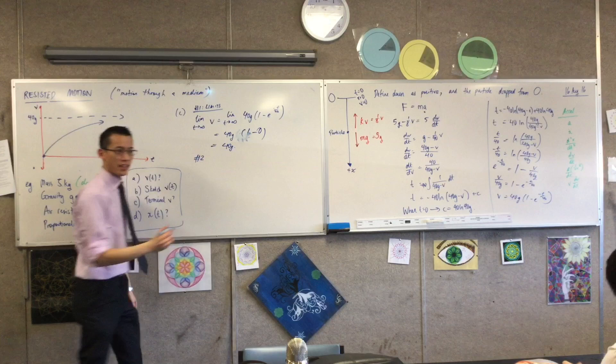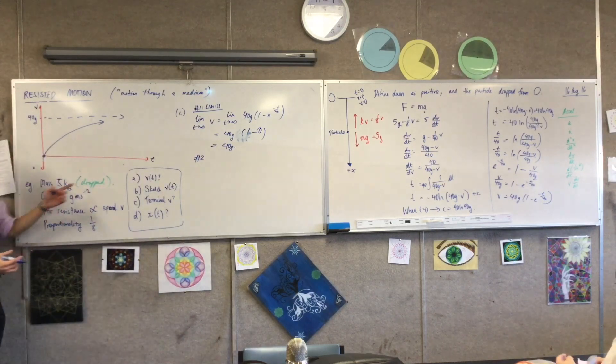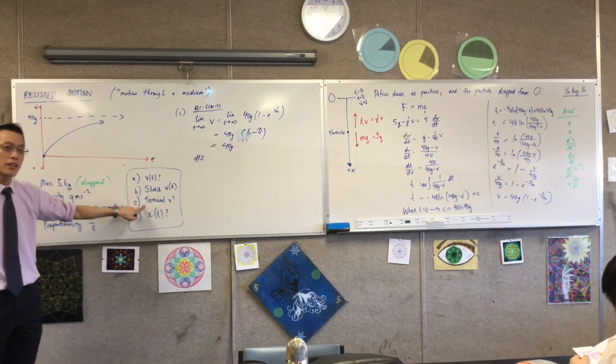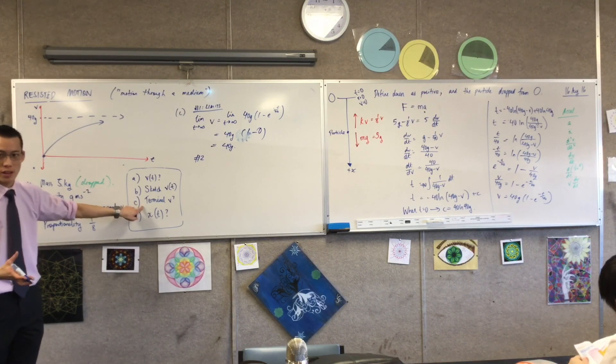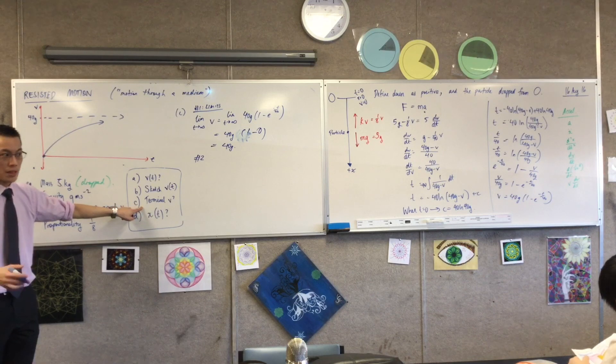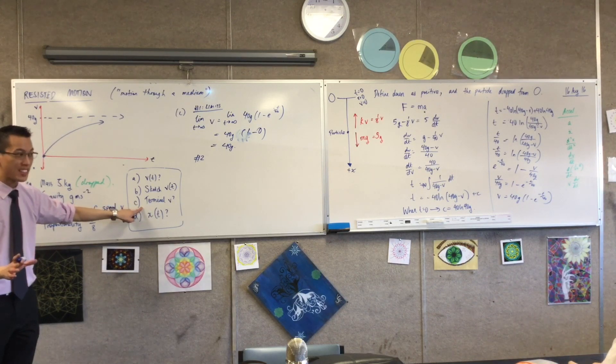But secondly, remember what we said about terminal velocity and Newton's laws? This is uniform straight line motion, which means what about the acceleration? It's uniform straight line motion. The acceleration is zero. There's no acceleration acting on the body.